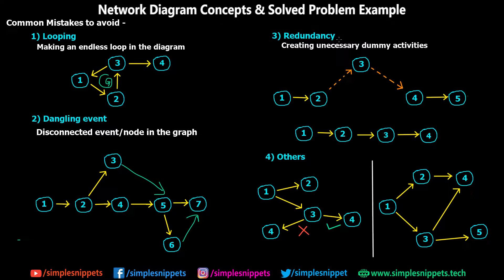The third error is Redundancy — using unnecessary dummy activities. For example, if we created an intermediate event 3 and two dummy activities unnecessarily in a diagram with nodes 1, 2, 3, 4, and 5, and we can avoid it, we should completely exclude it and simplify to just nodes 1, 2, 3, and 4.